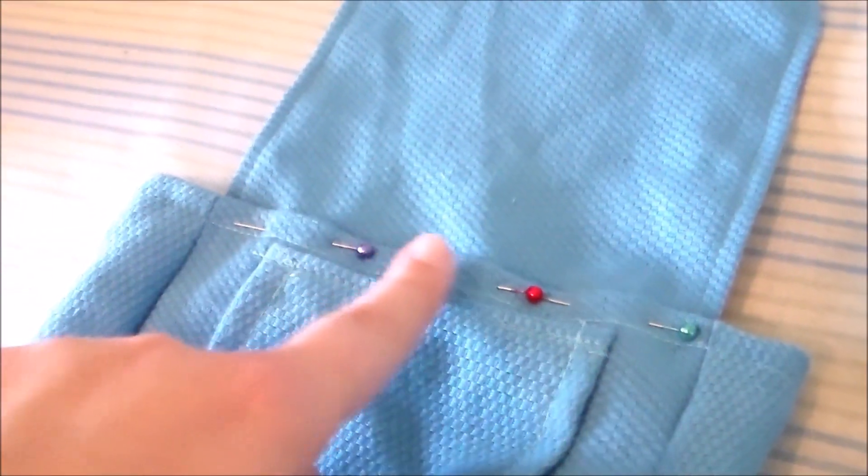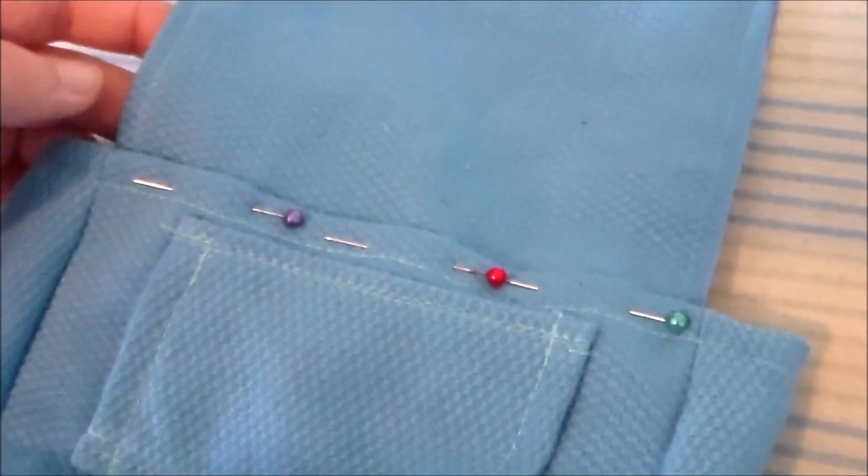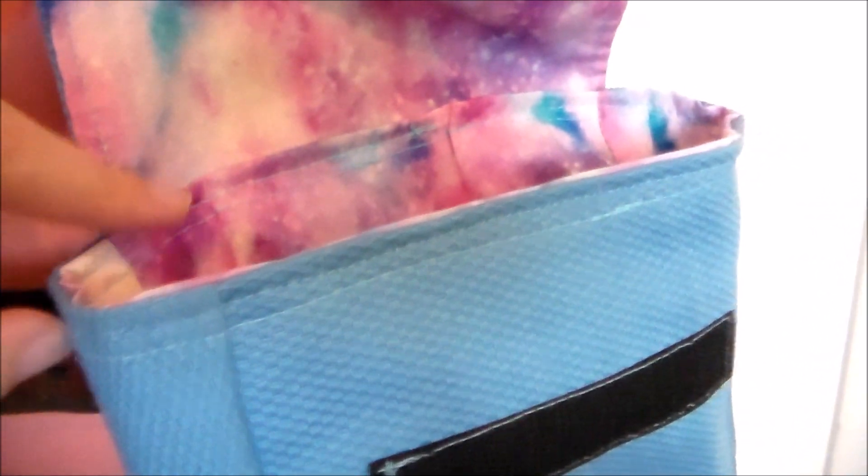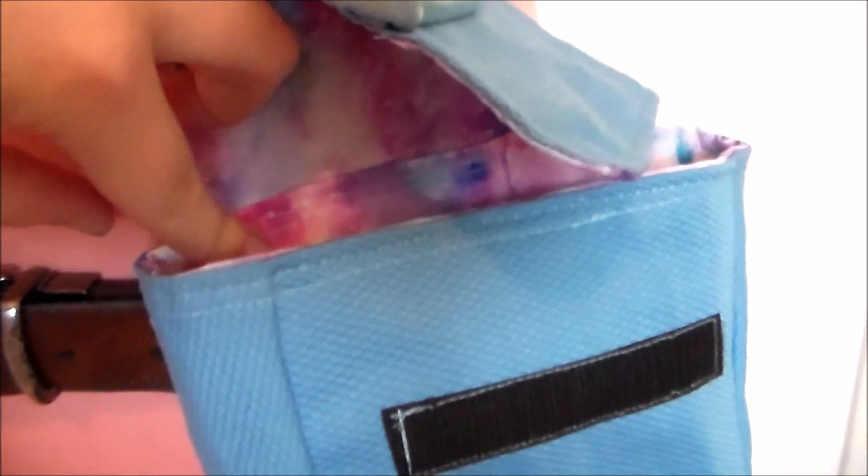Sew the flap to the back of the pouch. Position the lining into the pouch and sew all along the edge to secure it into place.